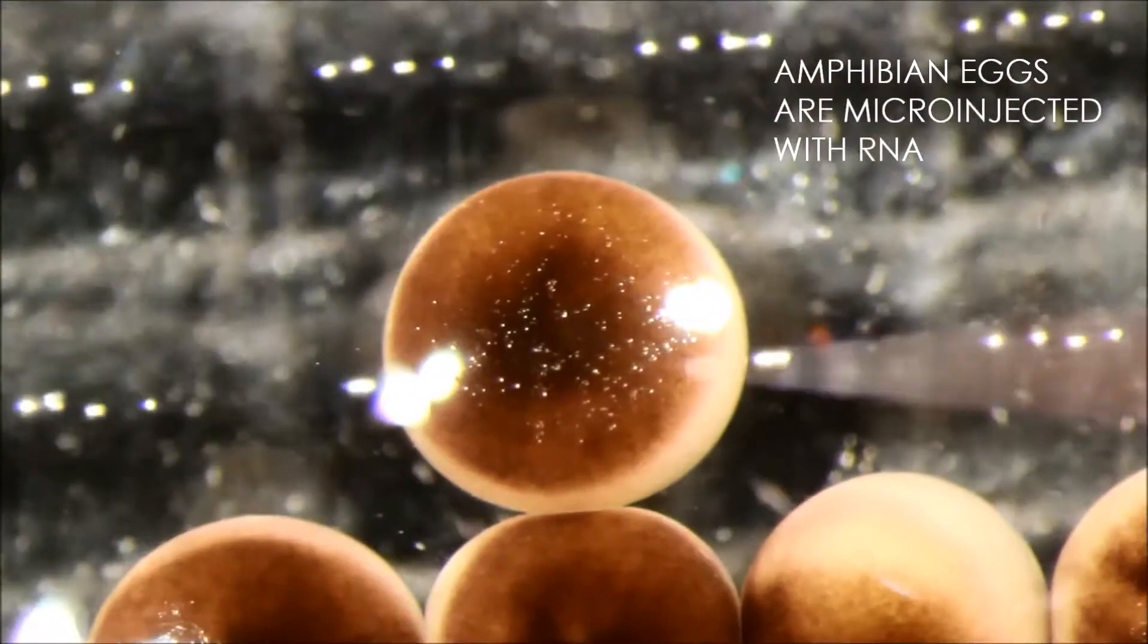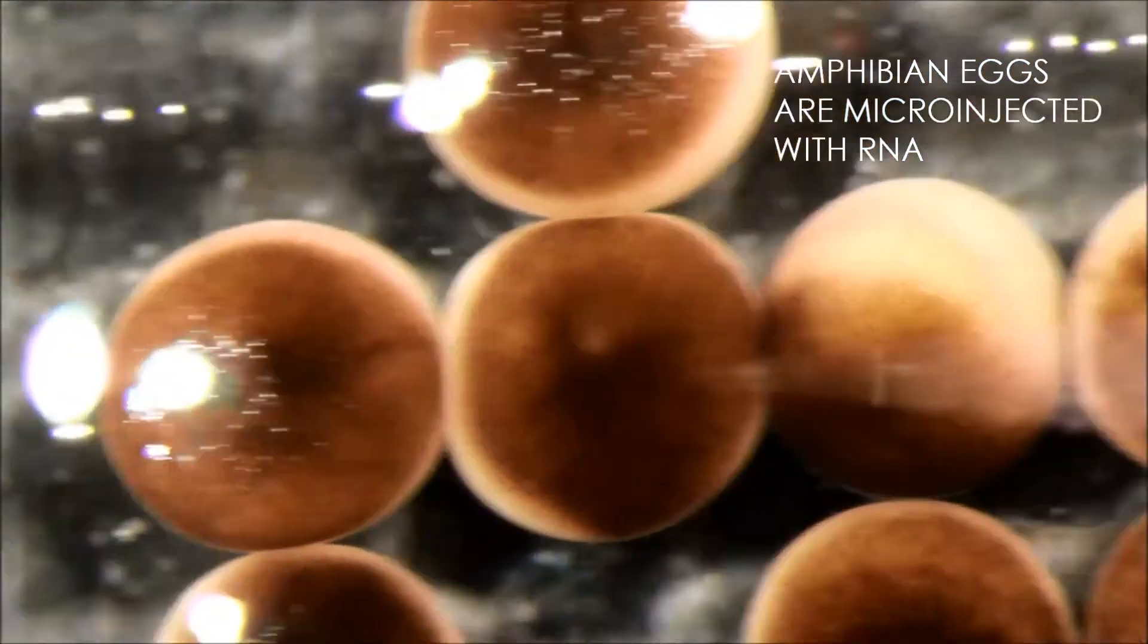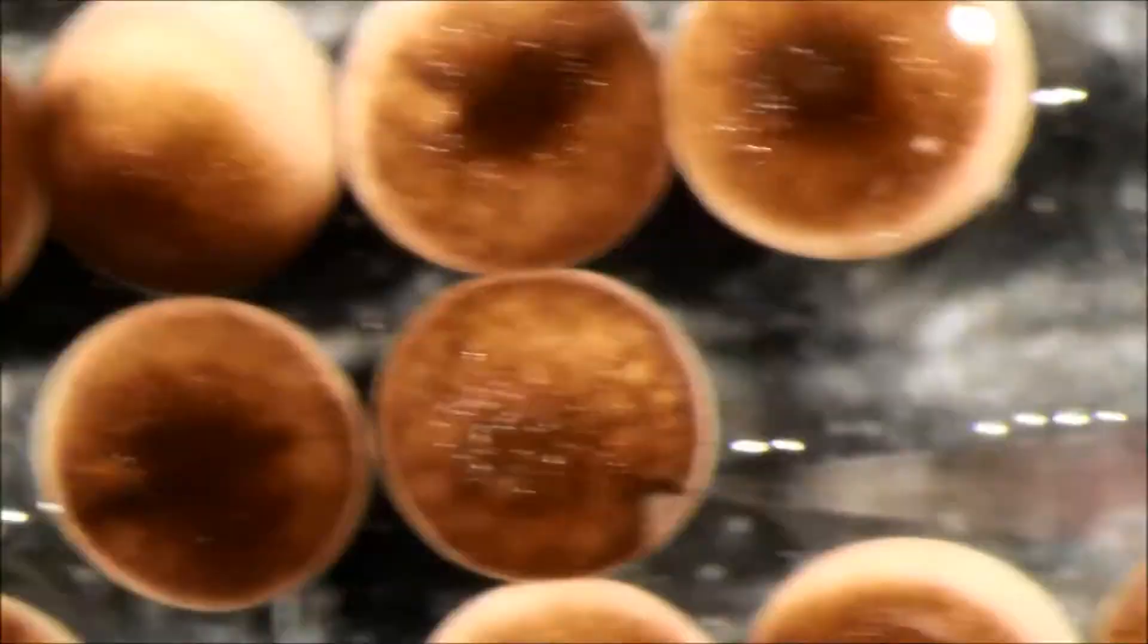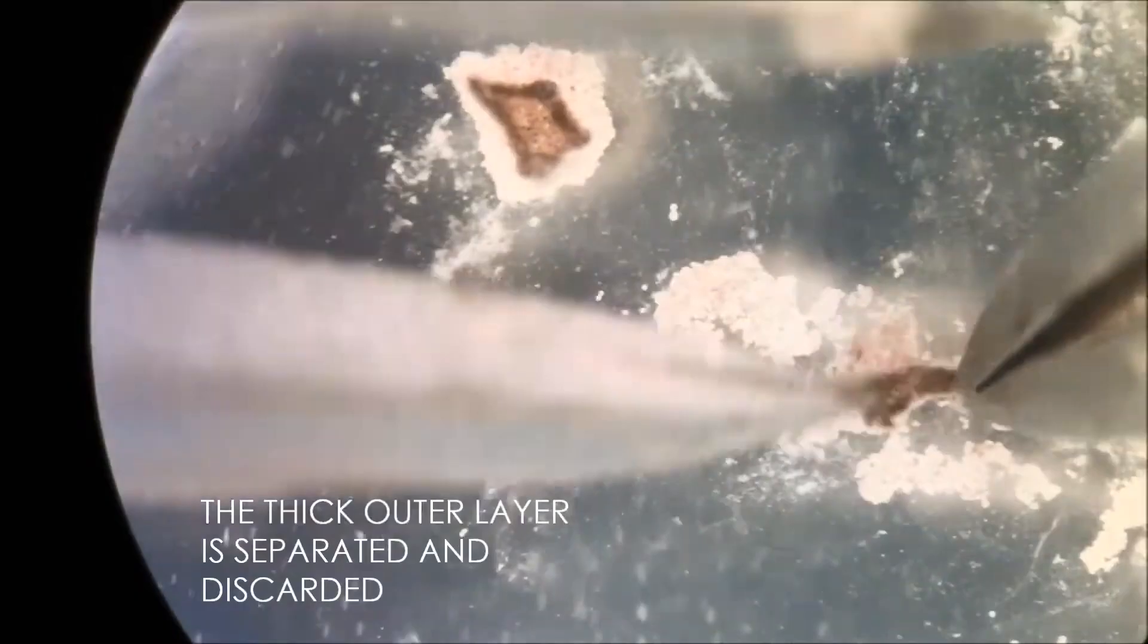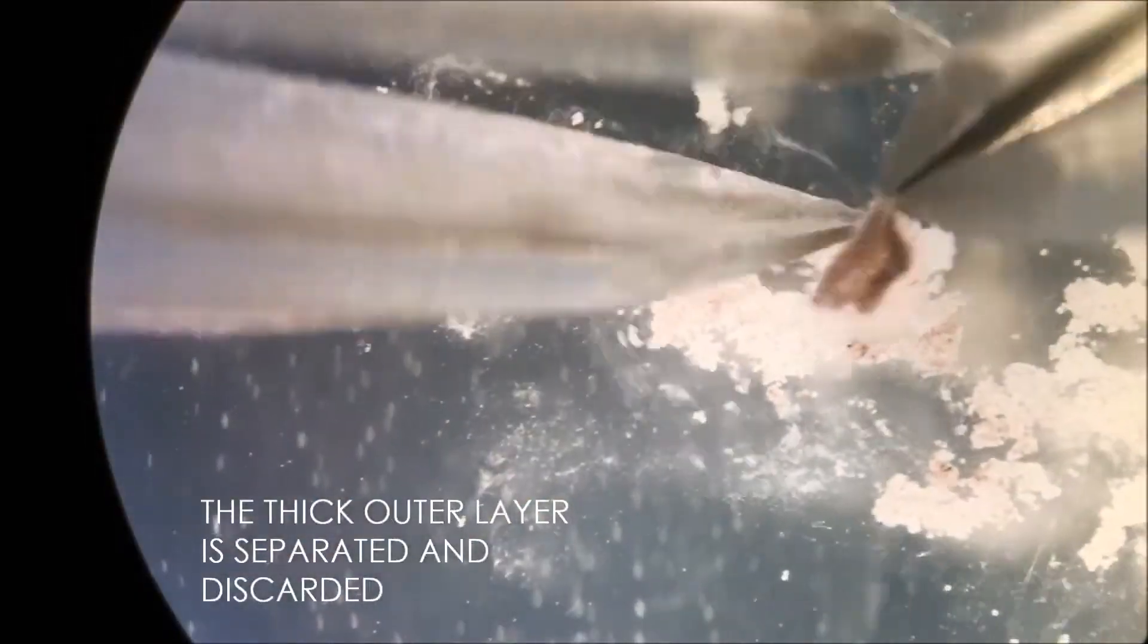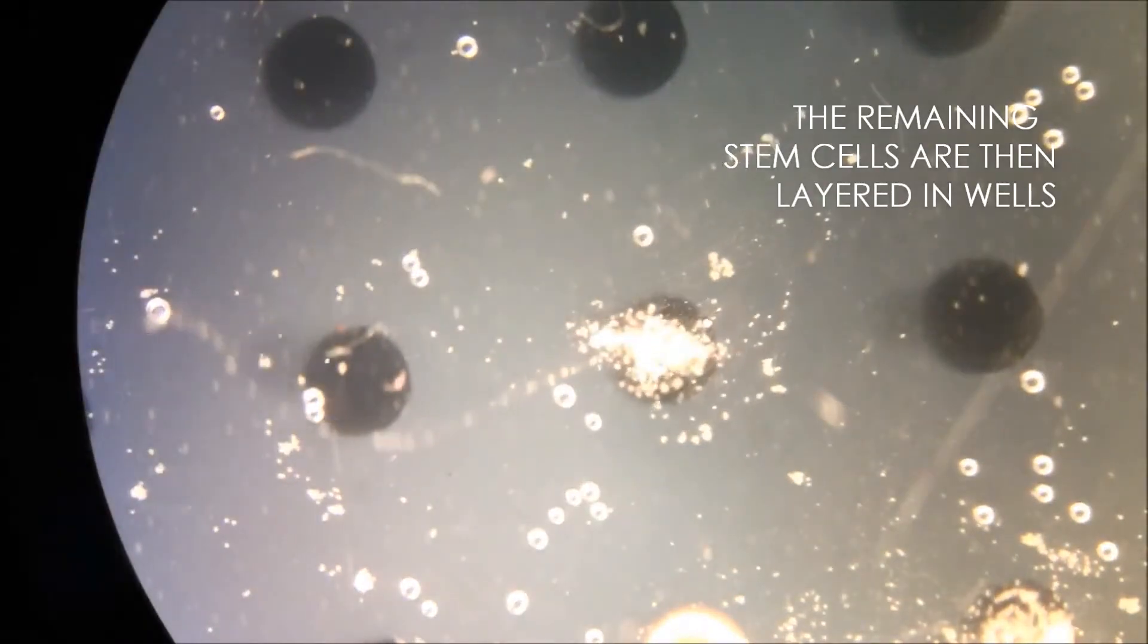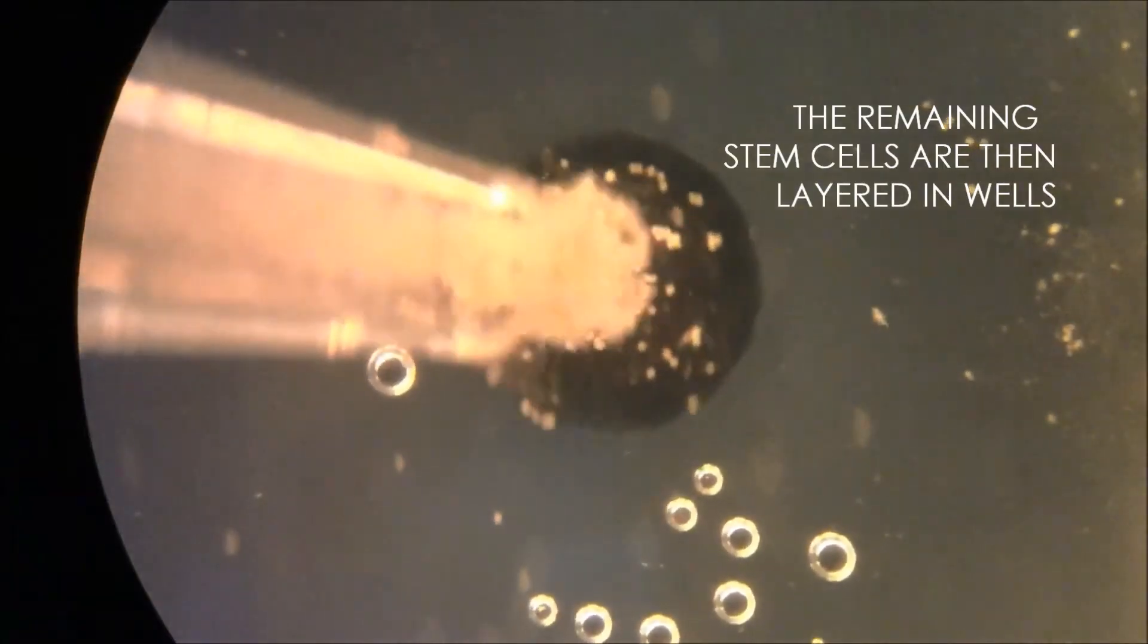First scientists inject frog eggs with RNA to create a package of stem cells contained in an egg membrane. 24 hours later this membrane is removed and the stem cells are extracted. Scientists will pipe these stem cells into tiny piles which spontaneously start to adhere into spheres of tissue a few thousand cells big.